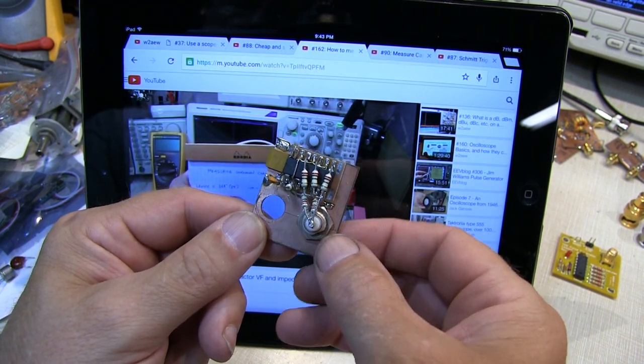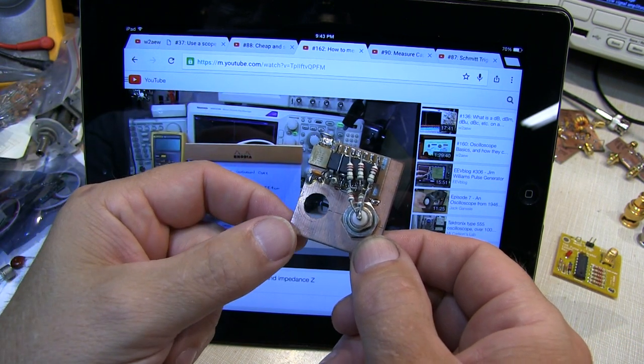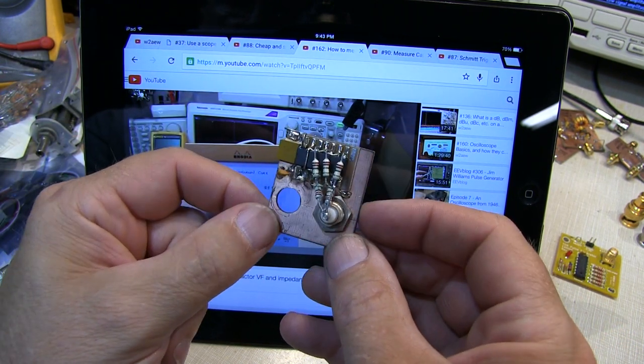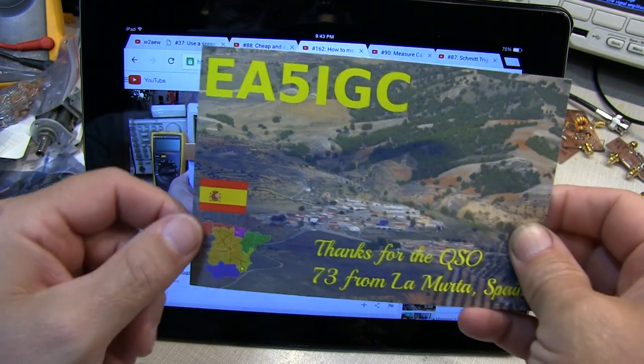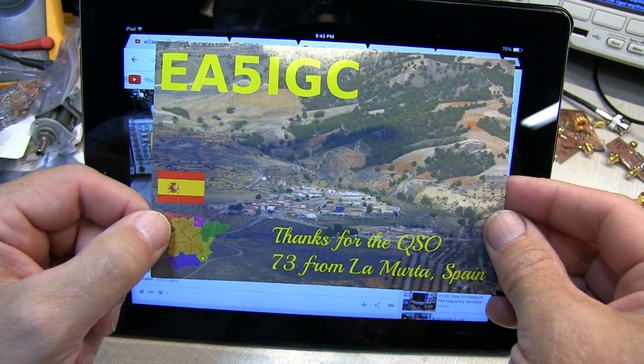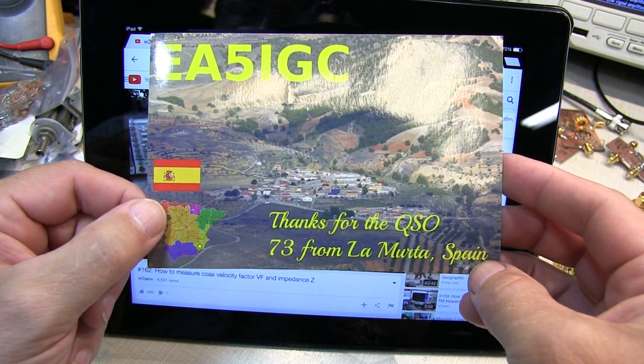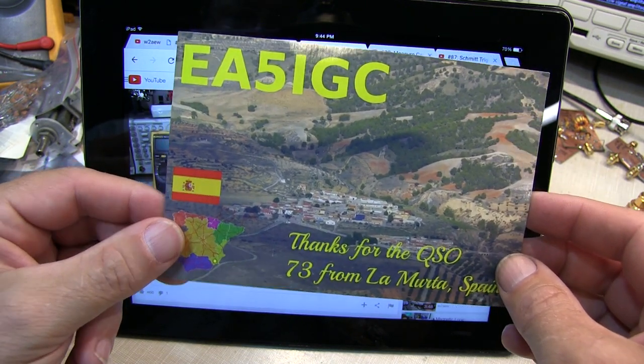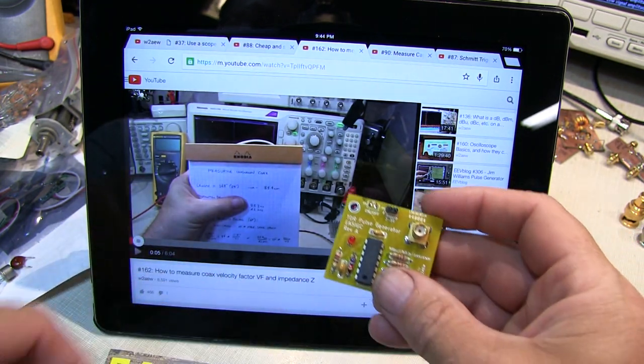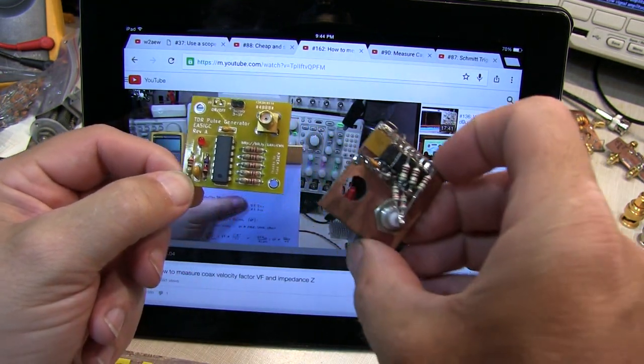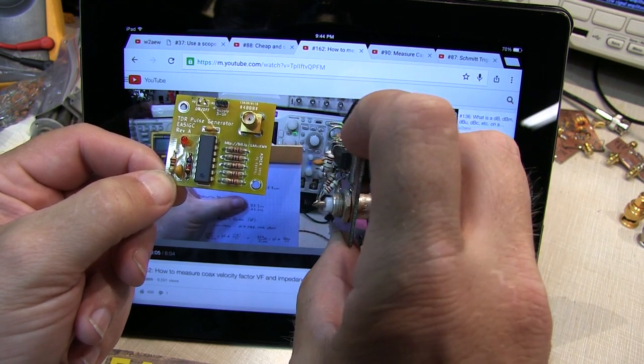Now I'll put links to each of these videos in the video description just down below the video here in YouTube. But the reason that we're revisiting this project is because one of my YouTube viewers and fellow ham radio operator, Marcus Jenkins, this is his QSL card, EA5IGC, who is from the southeast portion of Spain, was kind enough to actually design a PC board that could be used to build this circuit.